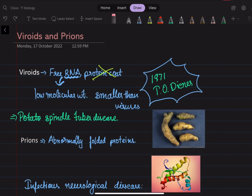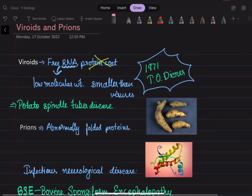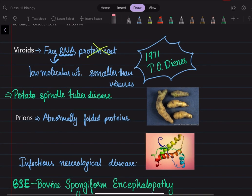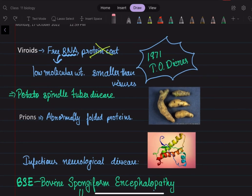Now moving on to another particle - prions. Prions are misfolded proteins. These misfolded proteins do not contain genetic material.